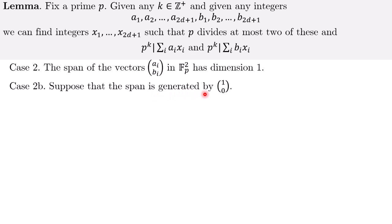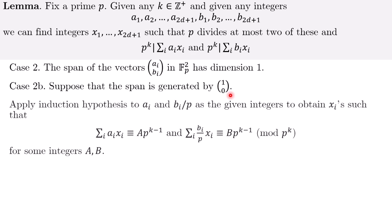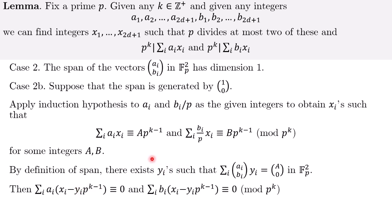Case 2b is that the span is generated by (1,0). Well, there's one more case where it's generated by (0,1), but the argument is symmetric. This time, we apply the induction hypothesis to the ai and bi/p as the given integers. Again, we can write this in this form, in this form. Same thing by definition of span. You can find y such that linear combination equals capital A, 0. Then same thing, subtract away the y's and then the a's will cancel out. For the b's, it's slightly different. From this expression, we see that bixi with the p moved over is already divisible by pk. So this disappears. bi*yi is equal to 0 in fp. So we have a factor of p here times pk-1. This is equal to 0. So same thing, we can let the new xi's be the new xi's.